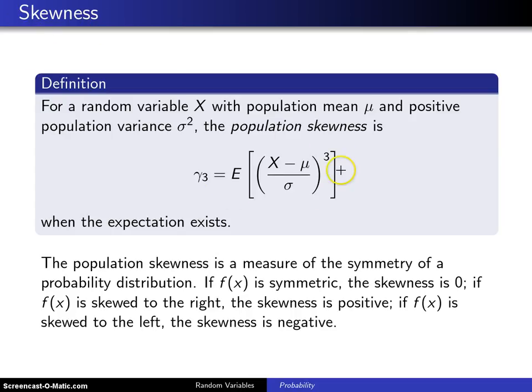As you can see in the definition up here, the skewness is going to be that standardized random variable raised to the third power. On the next slide, we will be defining the kurtosis, and that will be the fourth moment of the standardized random variable. So here's the definition for a random variable X, discrete or continuous, with population mean mu and positive population variance sigma squared. That's to avoid dividing by zero here.